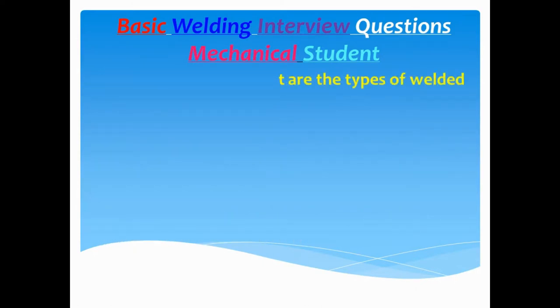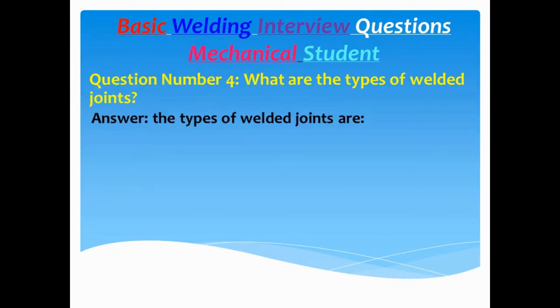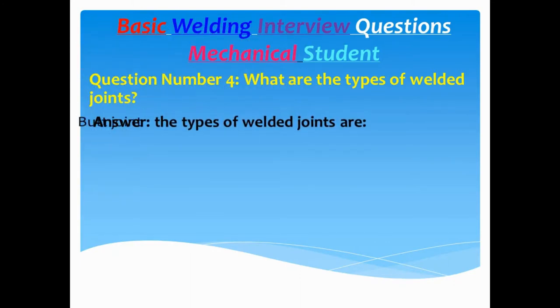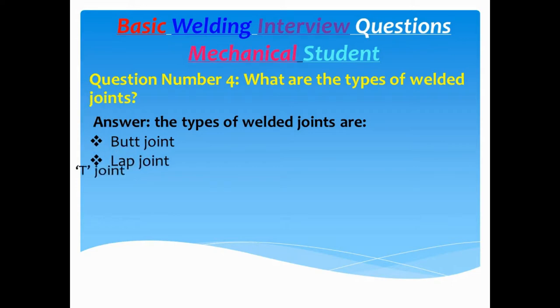Question number four: What are the types of welded joints? Answer: The types of welded joints are butt joint, lap joint, T joint, corner joint, and flange joint.